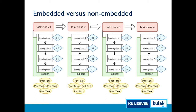We measured the use of the four components, distinguishing between embedded and non-embedded components. There were four task classes, each containing four learning tasks. Each learning task contained just-in-time information and part-task practice for different elements, plus continuously available support. Students could use everything marked in color on their own responsibility. The learning tasks had a specific sequence — like edX — where students push next and get progressively more difficult tasks, so that was less the students' own responsibility.